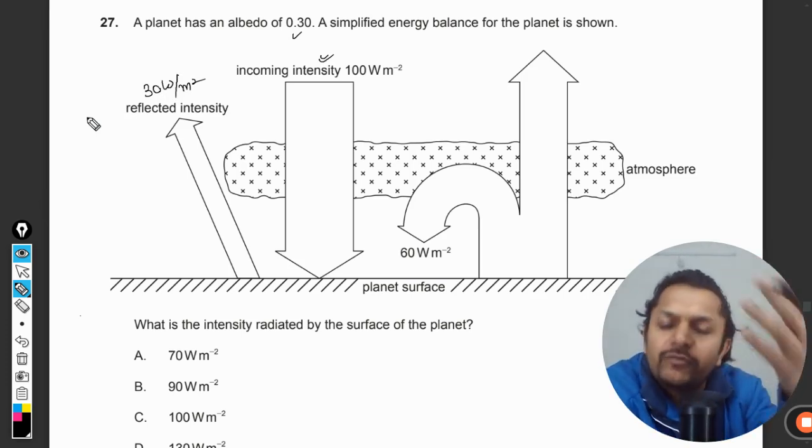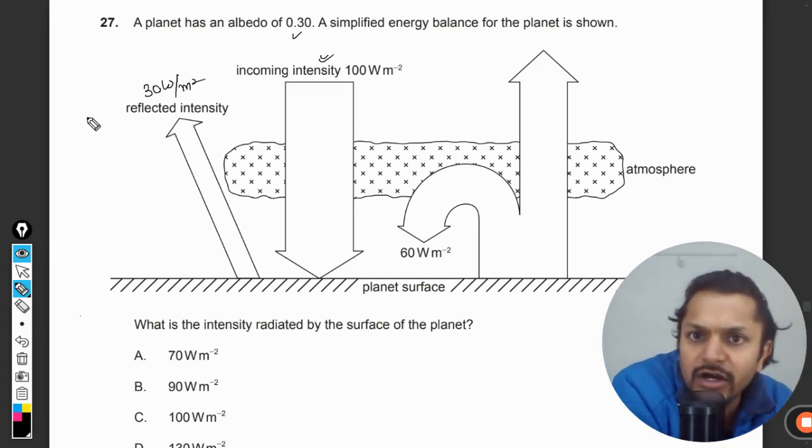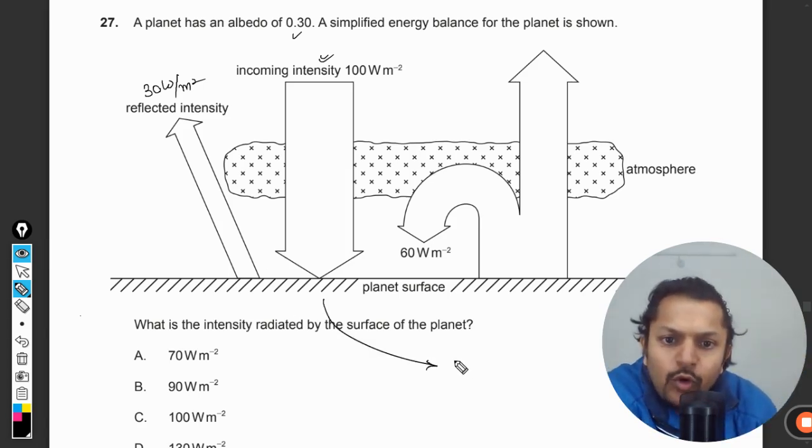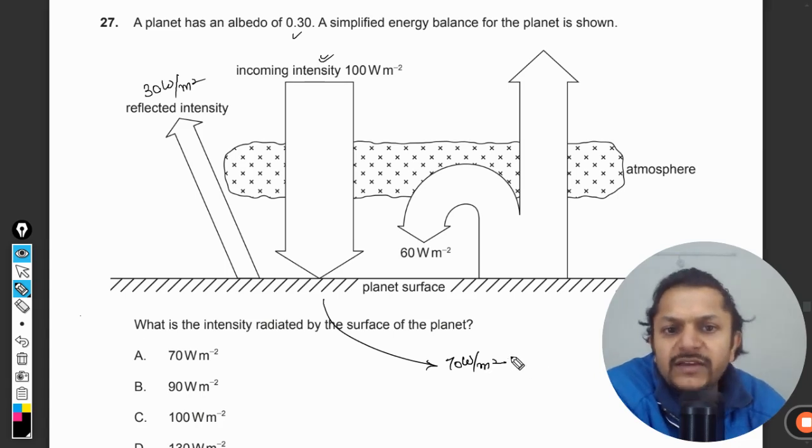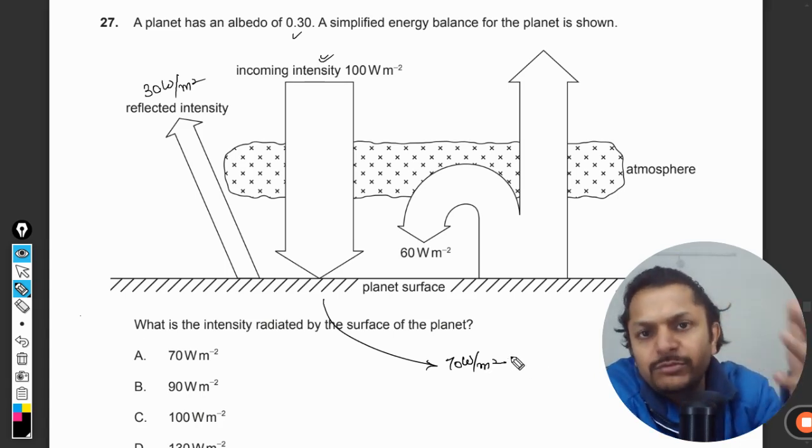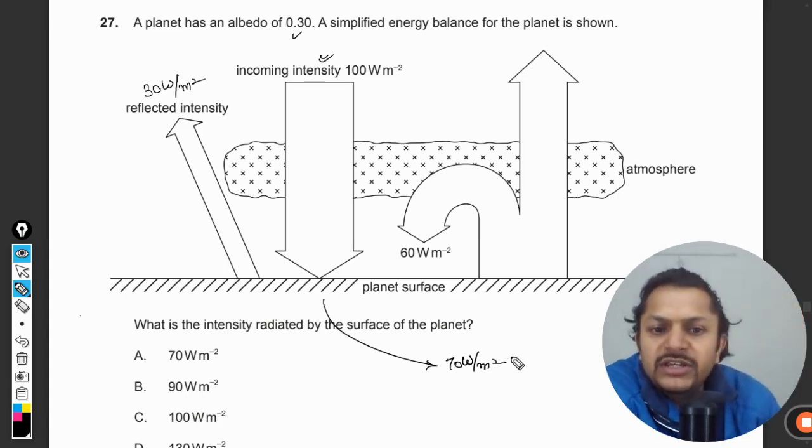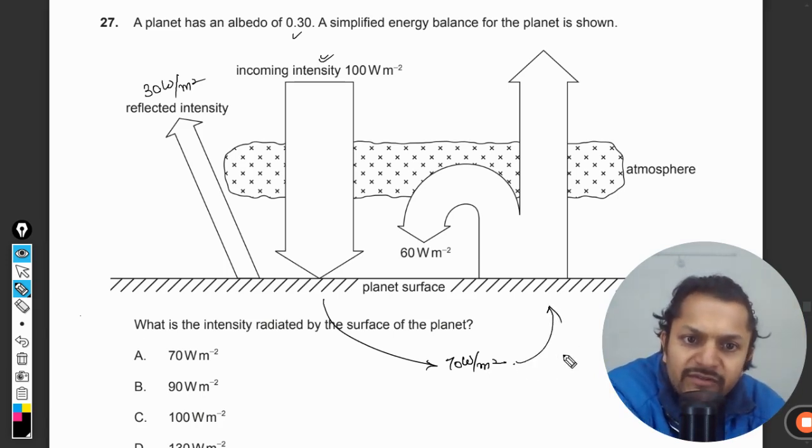Whatever 30 is gone there itself, you are left with 70 W/m². So 70 W/m² is the energy which is absorbed by Earth. Obviously, if the temperature has to remain constant, this energy has to be radiated back.